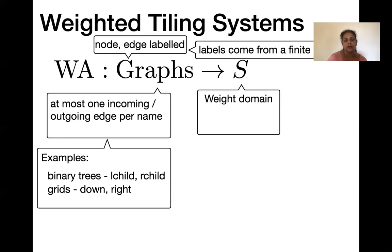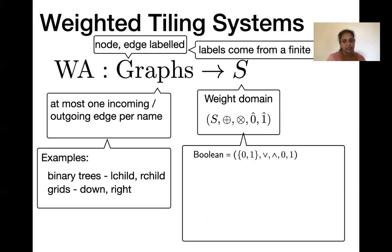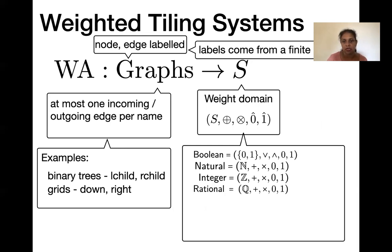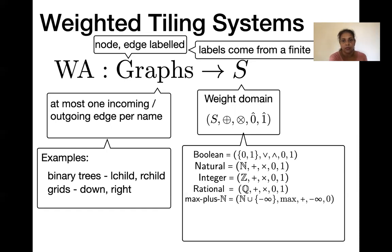For weight domains, the weight domain is equipped with a sum and a product making it a semiring. The weight domains we consider include booleans, natural numbers, integers, or rationals with addition and multiplication, and also tropical semirings such as max-plus or min-plus.